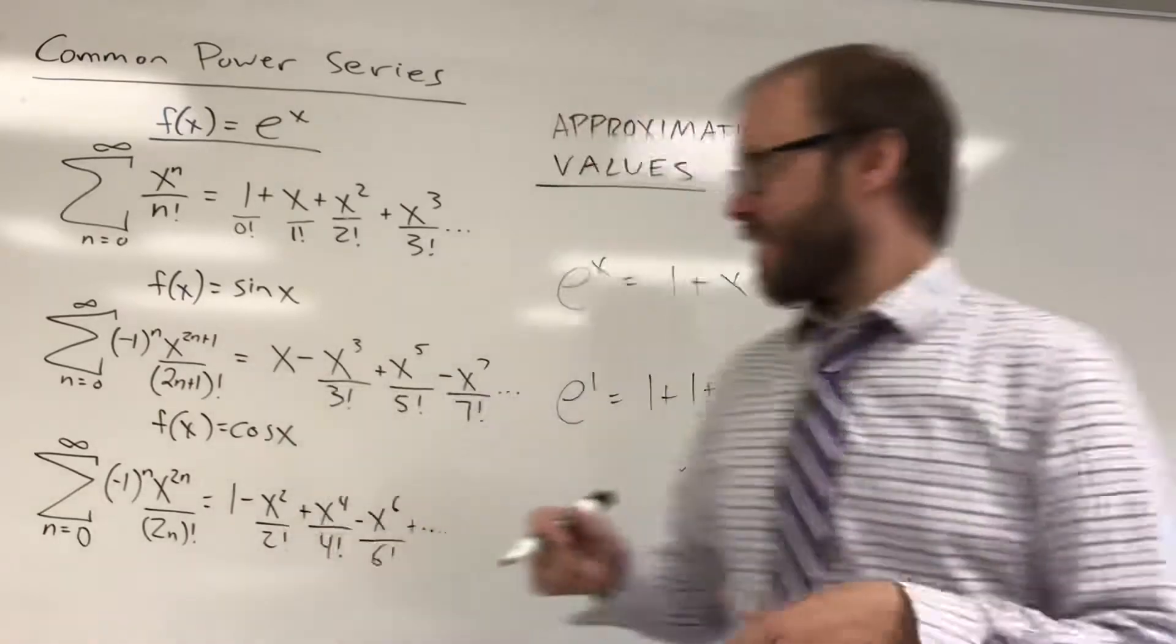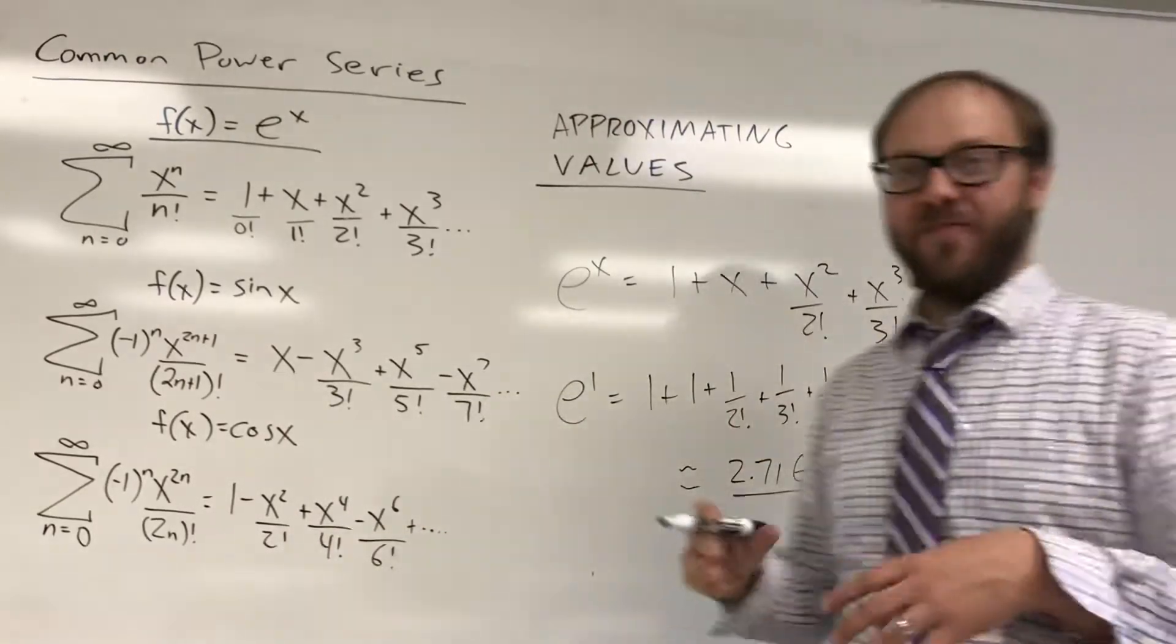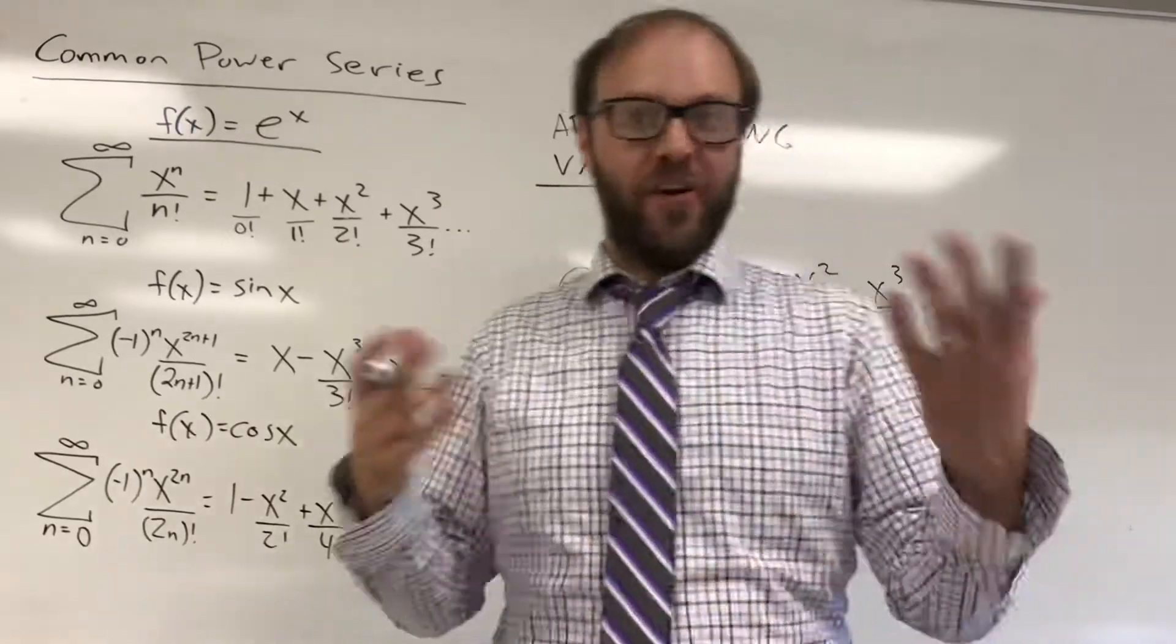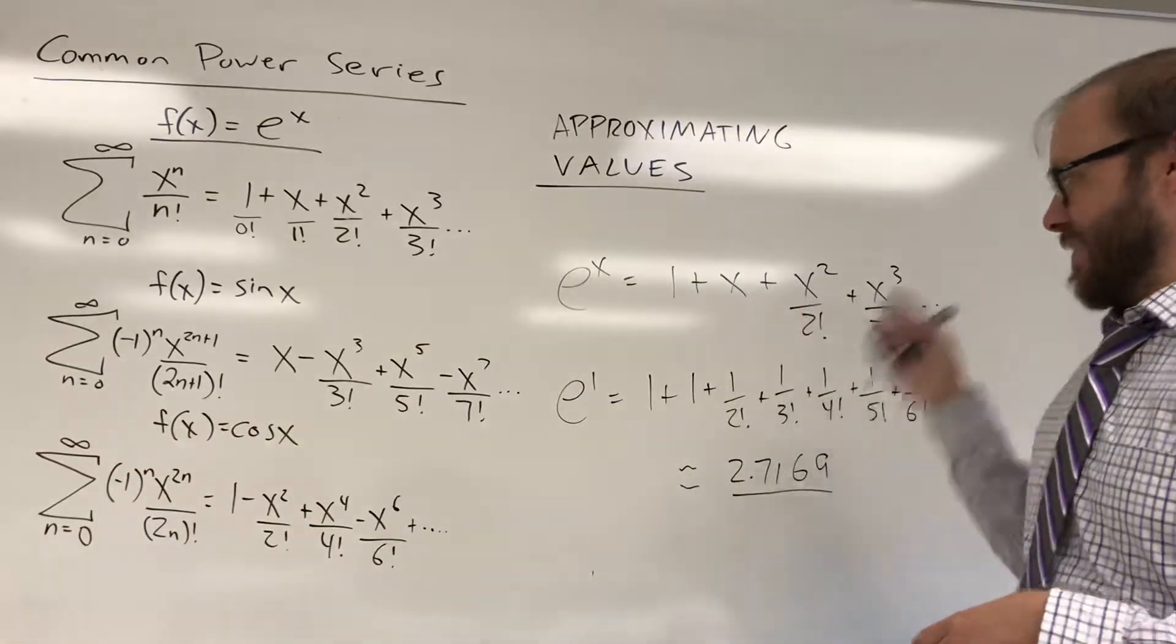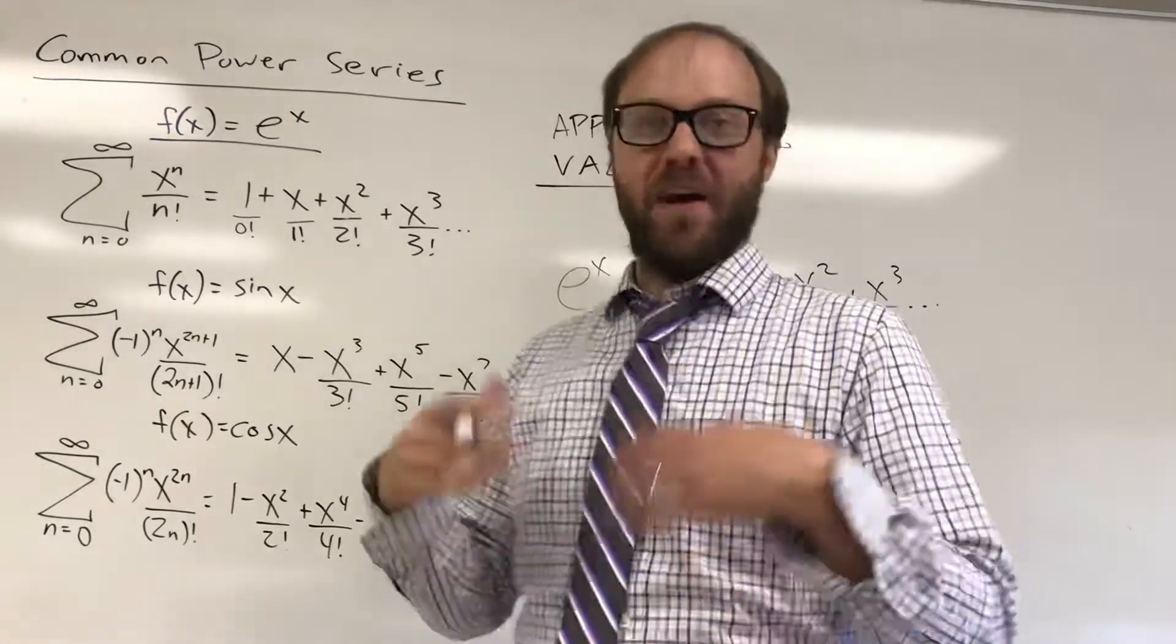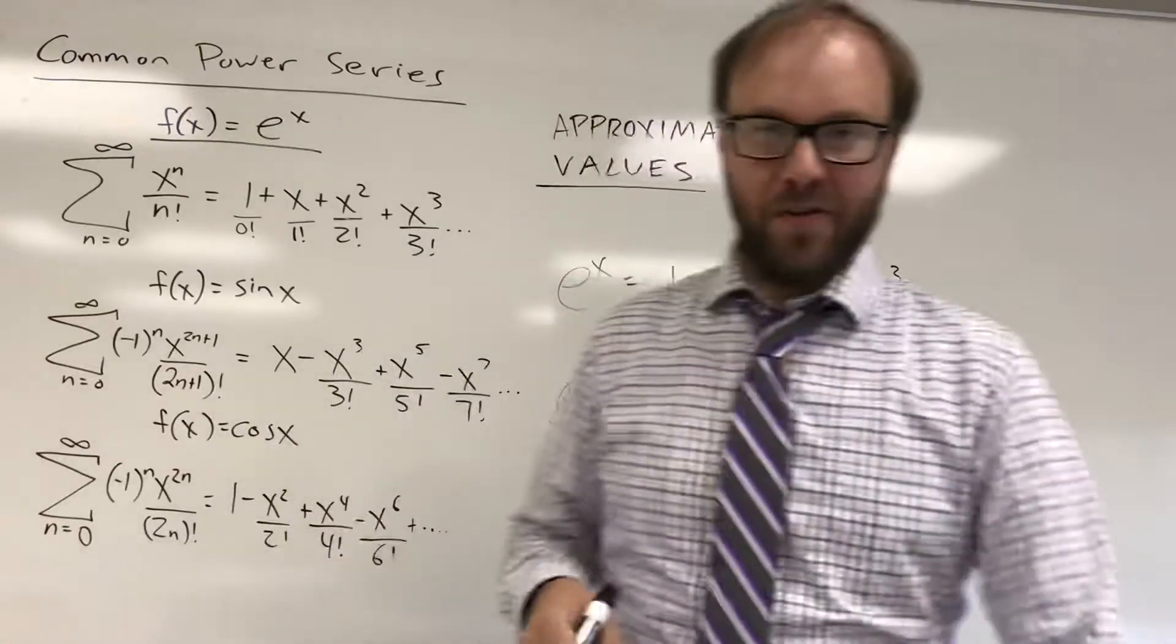If you want e squared, you could substitute in a 2 for each of these values. If you wanted 5e to the third, you would be putting in a 3 for x, and then you'd be taking your result and multiplying it by 5. So lots of really quick ways to generate lots of different values.